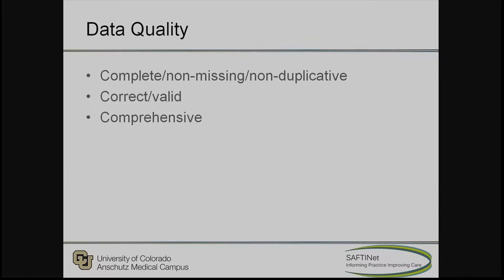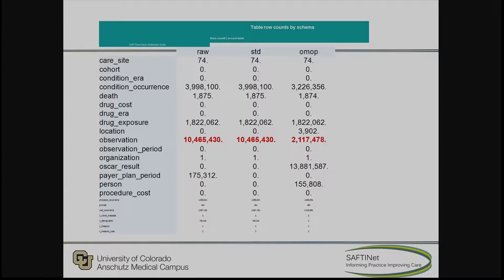A little bit about our data quality work: we look at whether data is complete, whether it's missing, non-duplicative, correct, valid, and comprehensive. We developed an open-source software system called Rosita that helped our practices with data transformation. Within our system, data was first loaded into raw tables, then moved to a standard table — think of it as a pre-OMOP stage — and then to OMOP. We had reports built using a Jasper reporting services tool that partners could run to assess data quality and transformation steps.